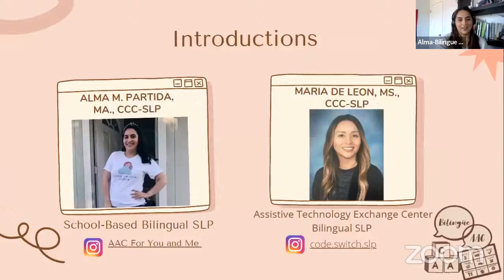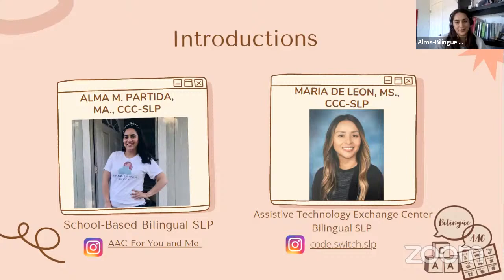A little bit about myself. My name is Alma. I'm a bilingual SLP in Northern California, employed through the city of Santa Cruz. I run the Instagram account called AAC for You and Me, where I focus on bilingualism, accessibility, and AAC. I also co-created another AAC account called Diverse AAC, where we've made YouTube videos about creating a code switch button, adding pronouns, and making things accessible for diverse AAC users. From there, Bilingue AAC sprouted, and I'm now specifically focusing with this group on Spanish and English AAC therapy.